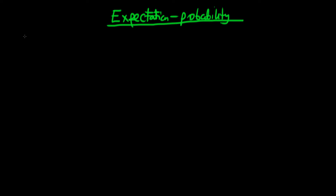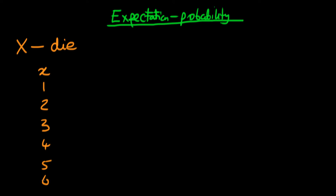Let's think about what it actually means to take the expectation of any discrete random variable. The example I'm going to give is where random variable X represents the throwing of a fair die. The random variable can take on values one, two, three, four, five, or six, each with an associated probability of one sixth, since we're assuming it's a fair die.